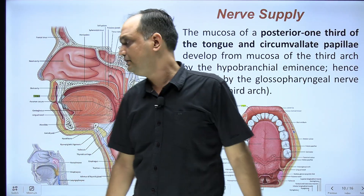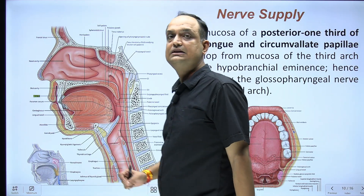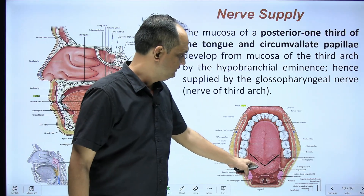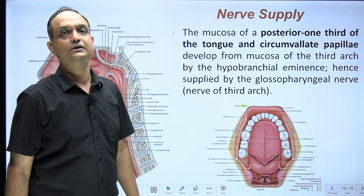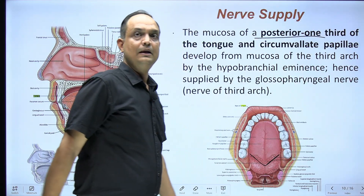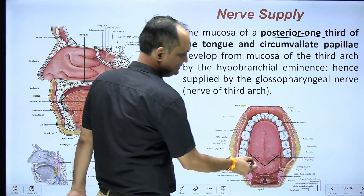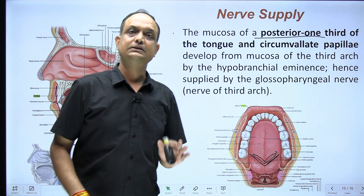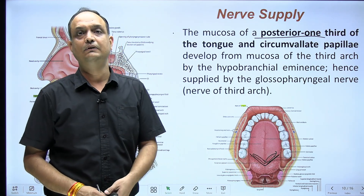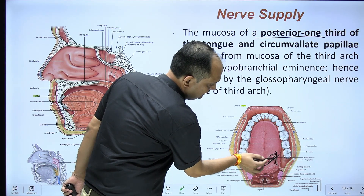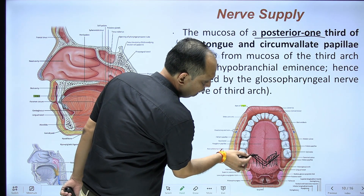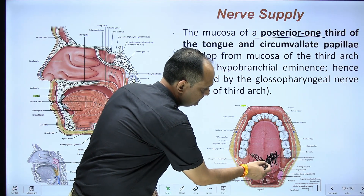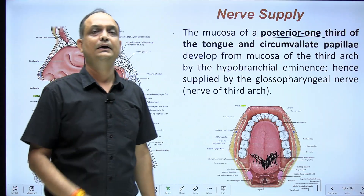The tongue is divided by the sulcus terminalis into anterior two-thirds and posterior one-third. The posterior one-third is supplied by the glossopharyngeal nerve because it is the nerve of the third arch, which develops the posterior one-third. The circumvallate papillae, located on the posterior-most aspect of the anterior two-thirds, are also supplied by the glossopharyngeal nerve because the mucosa of the posterior one-third was pulled anteriorly during development, overlaying this region.